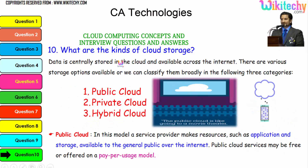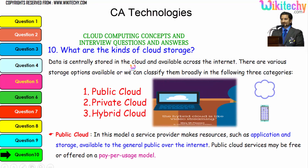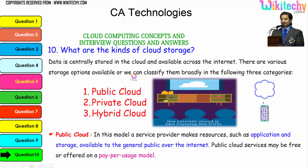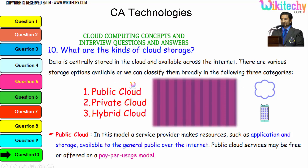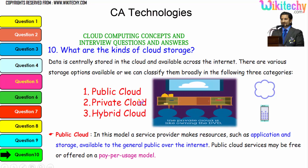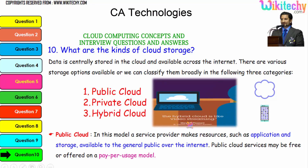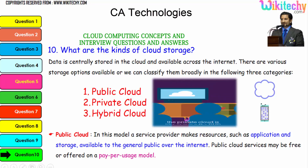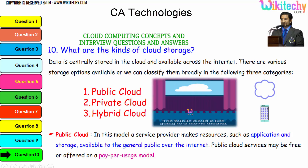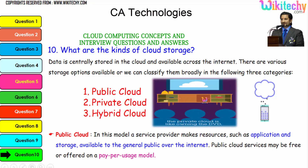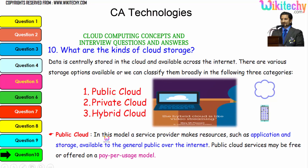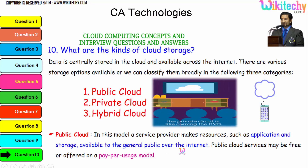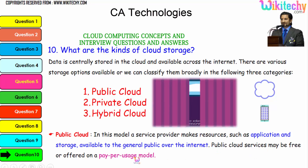Now let's talk about the kinds of cloud storage. Data is centrally stored in the cloud and available across the internet. There are three major storage categories: public cloud, private cloud, and hybrid cloud. Public cloud is like going to a movie theater. Private cloud is like owning a DVD at home. Hybrid cloud is like video streaming — a mix of private and public. In the public cloud model, a service provider makes resources such as applications and storage available to the general public; services may be free or offered on a pay-per-usage model.